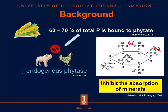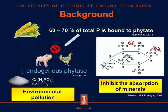In addition, phosphorus in this form is not available for pigs and poultry, because they don't have enough endogenous phytase. Therefore, swine and poultry diets are supplemented with inorganic phosphorus, like monocalcium phosphate or dicalcium phosphate. But high phytate phosphorus excretion in manure is a potential source of environmental pollution.